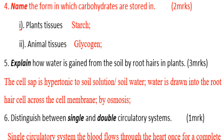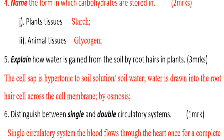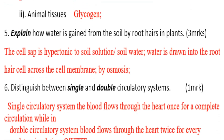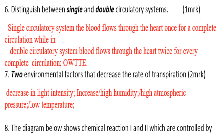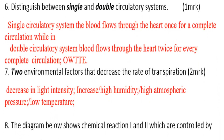Distinguish between single and double circulatory systems. In a single circulatory system, blood flows through the heart once for a complete circulation, while in a double circulatory system, blood flows through the heart twice for every complete circulation.